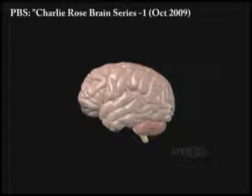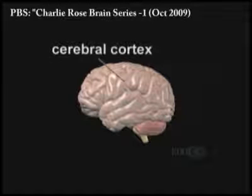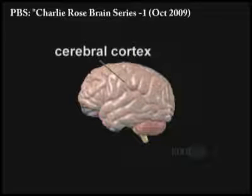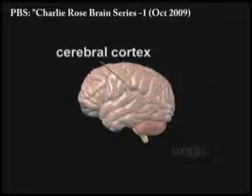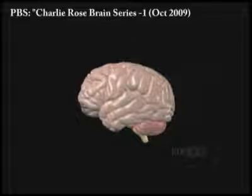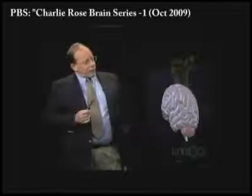This brain is covered, as the human brain is, most prominently by a structure called the cerebral cortex, which is this gray mantle of tissue that's really almost all that's visible when you look at the human brain from the side. The cerebral cortex is the main computing machinery of the brain, and it's also the part of the brain that's most highly evolved in humans compared to our ancestors in the animal kingdom.